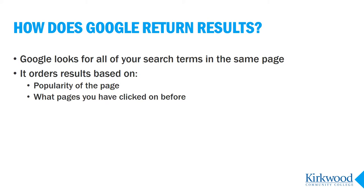So, how does Google decide what results to return and in what order? When you enter a search, Google looks for web pages in its index that contain all the words you entered. It decides what order to show you those results based on, among other things, what pages are most popular.